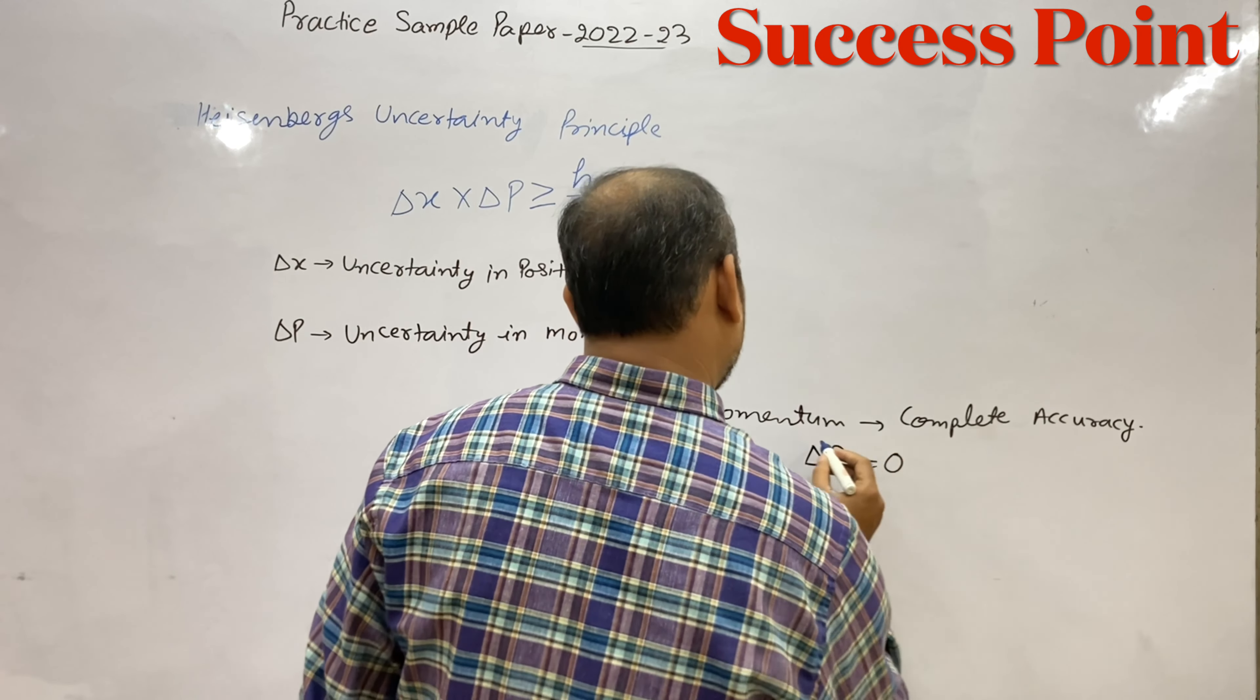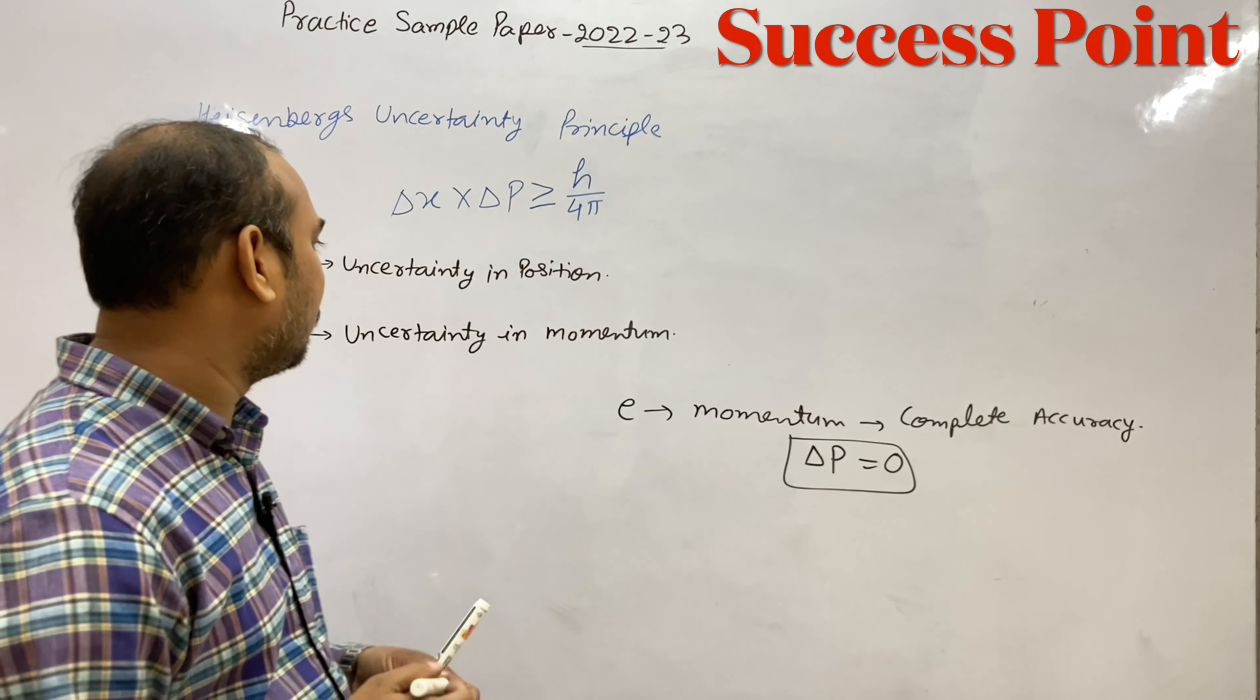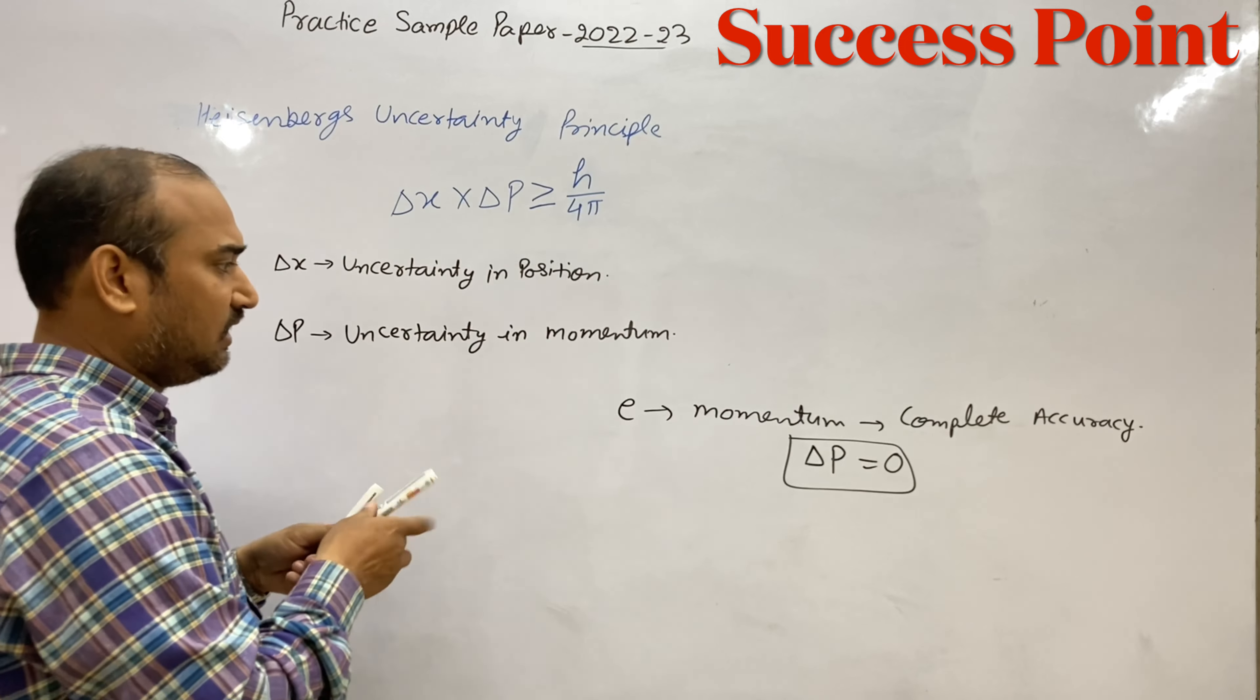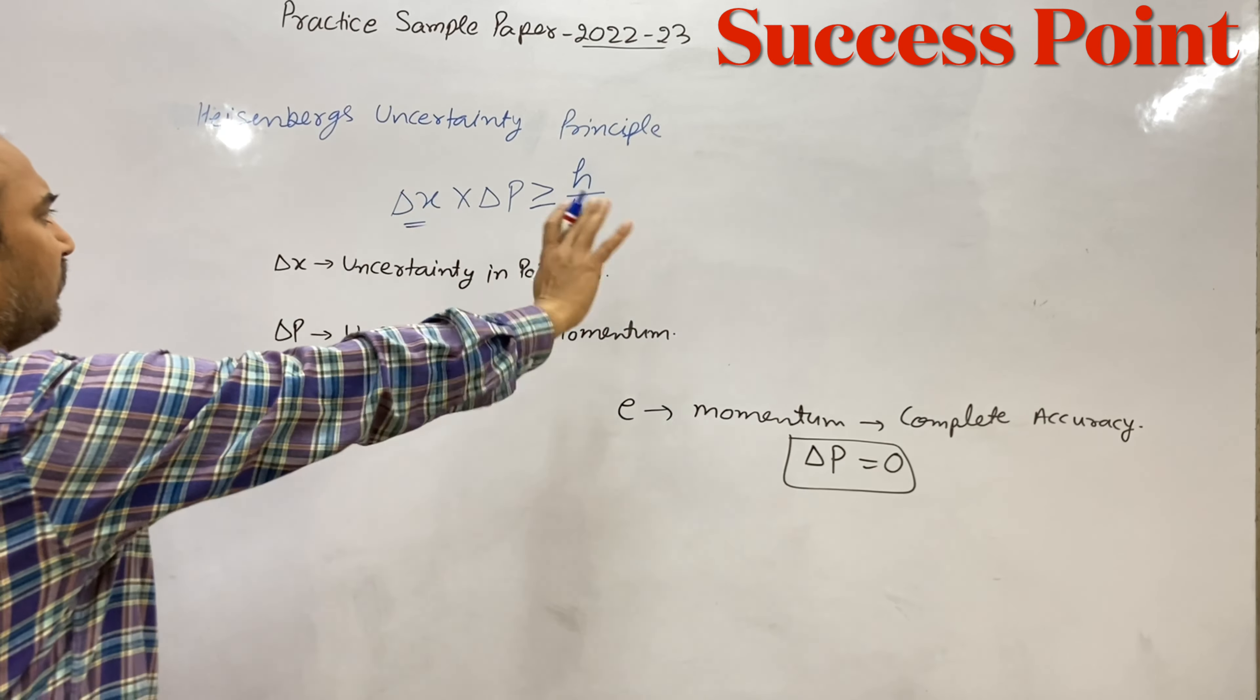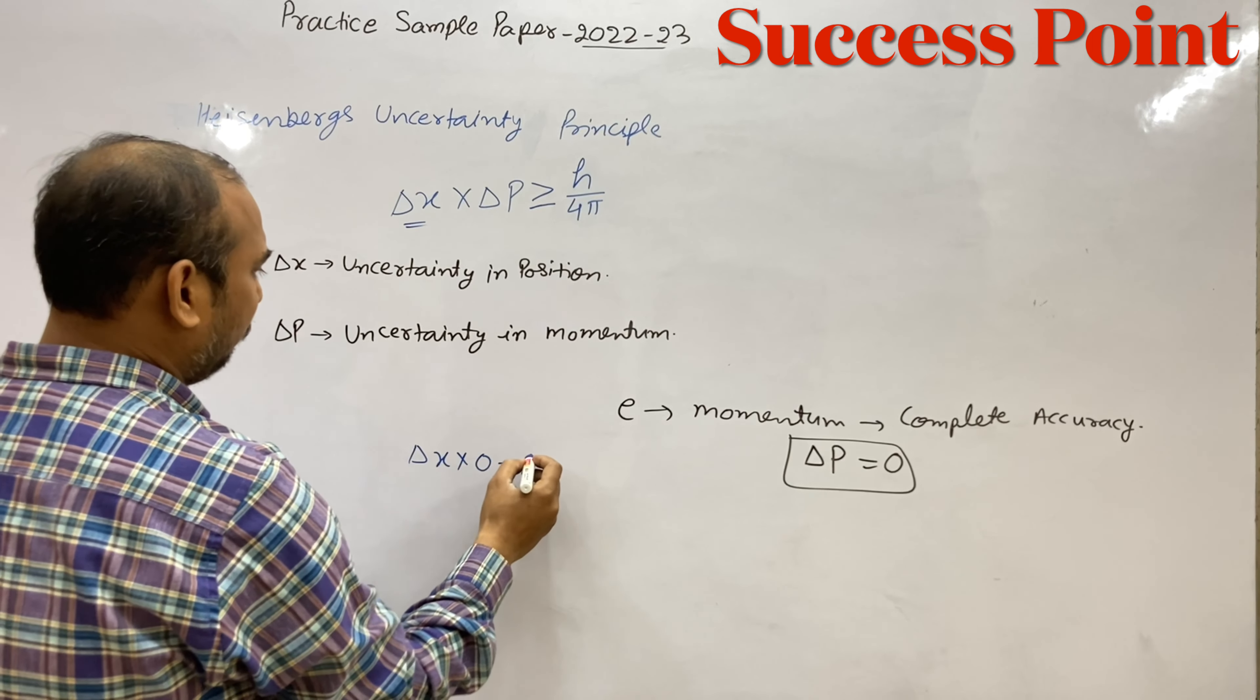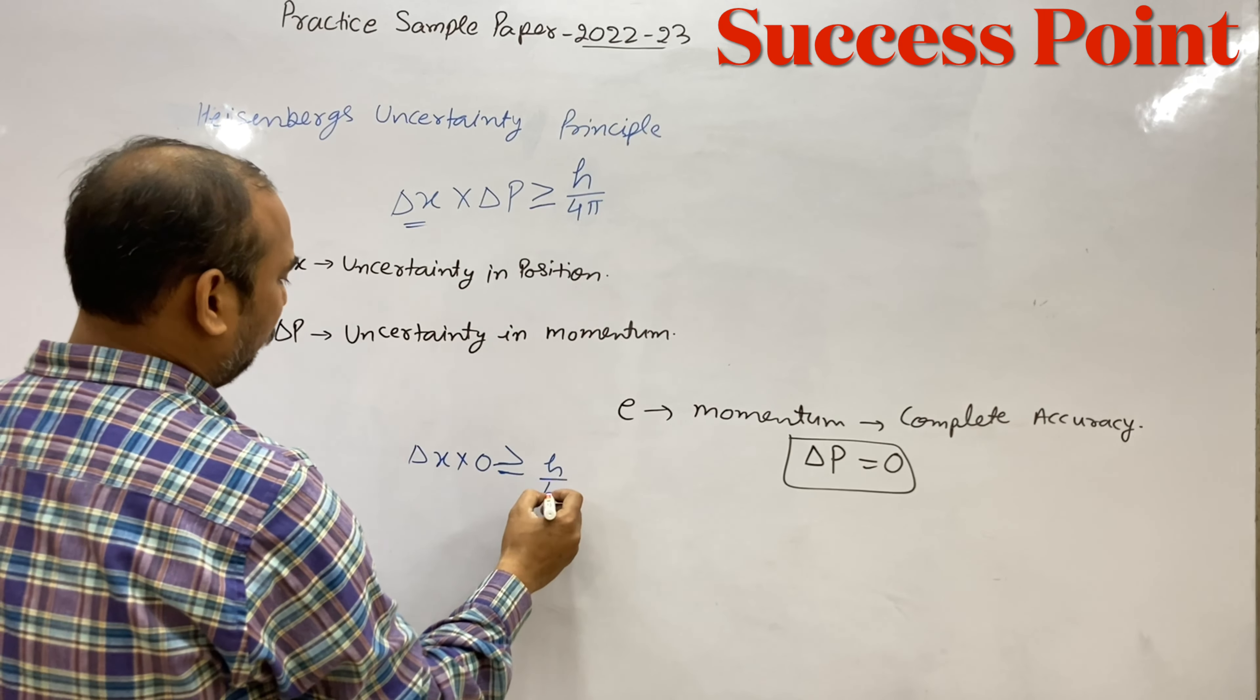So this uncertainty is zero. Now, using this formula, we have delta x times delta p is greater than or equal to h upon 4 pi.